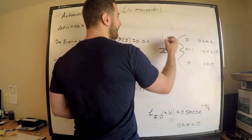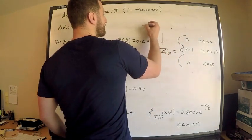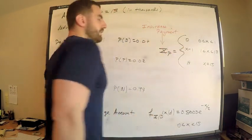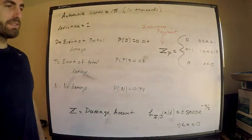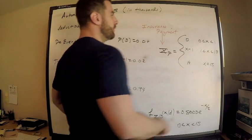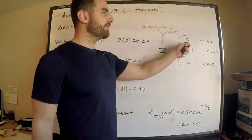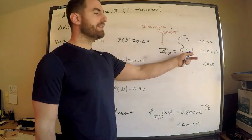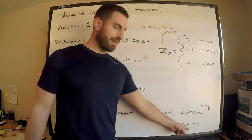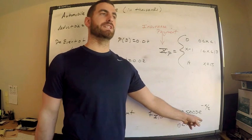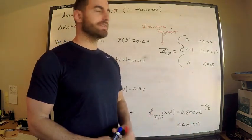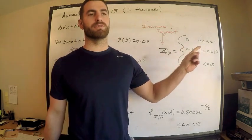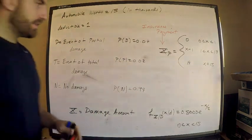We're interested in the expected payment. I usually write the insurance payment as X. The deductible is 1, so I — the insurance company — pay nothing if your damage is less than 1. I pay the damage amount minus the deductible if it's between 1 and 15 (strictly less than 15) — that's when partial damage occurs. For total damage, I pay 14, because the automobile is worth 15 minus the deductible of 1.